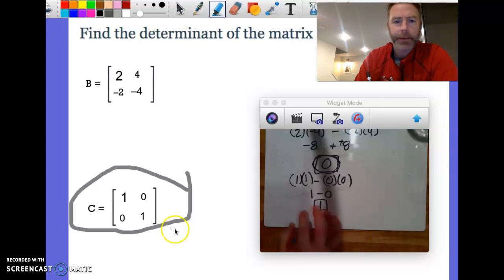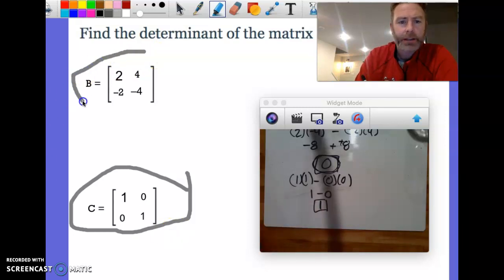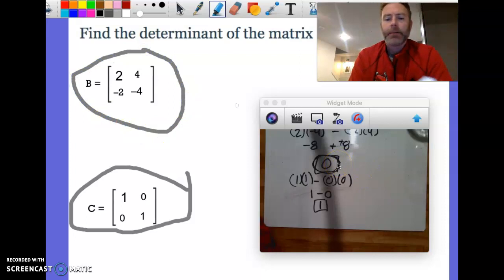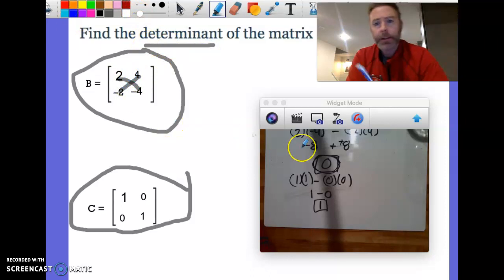And when we have this matrix up here, this matrix giving us a determinant of zero also has something special. So we will talk about those tomorrow. Big idea today is that you can find the determinant. Remember, it's the product of this diagonal minus the product of this diagonal. That's it.